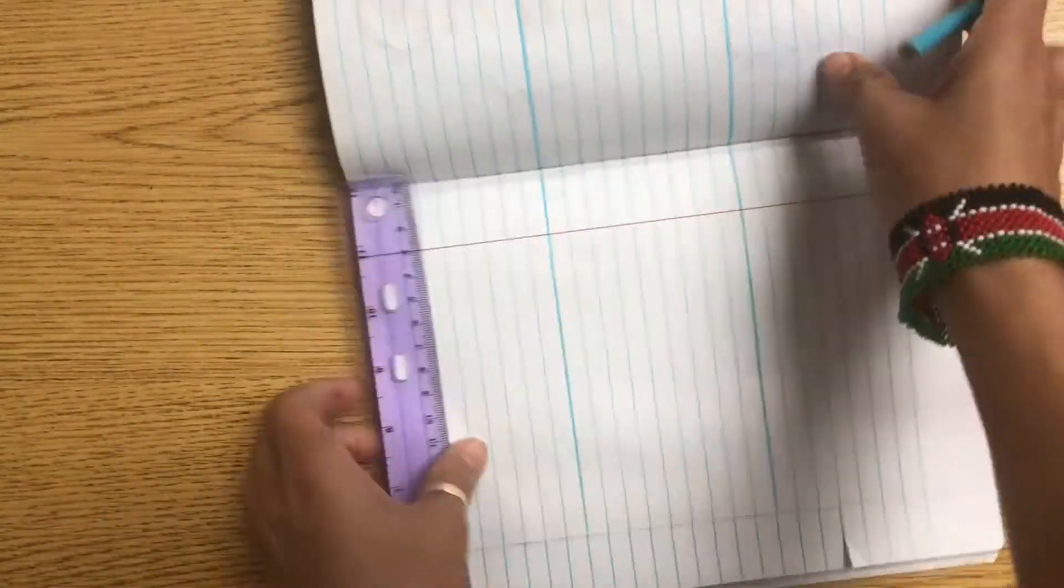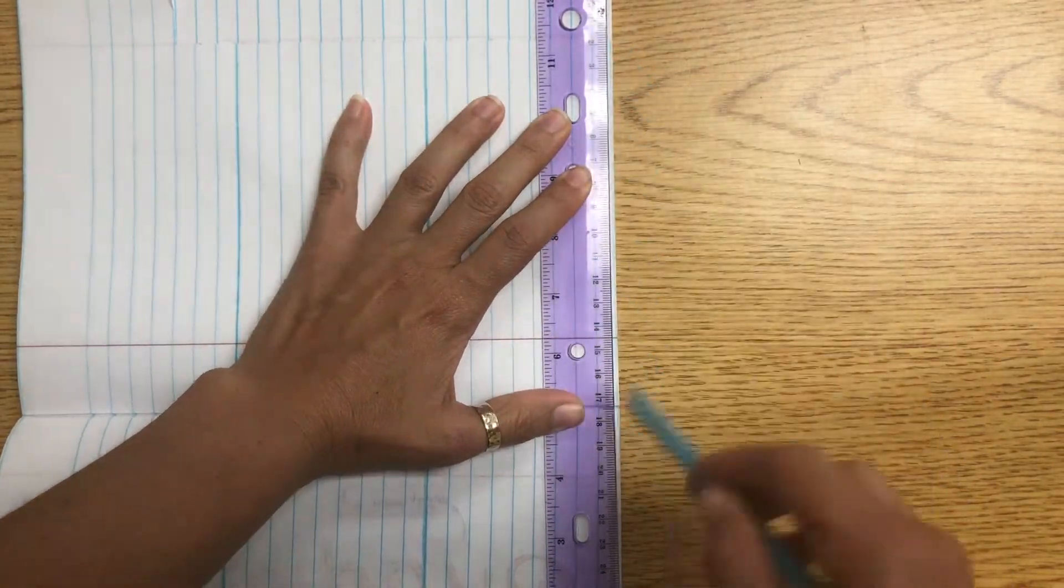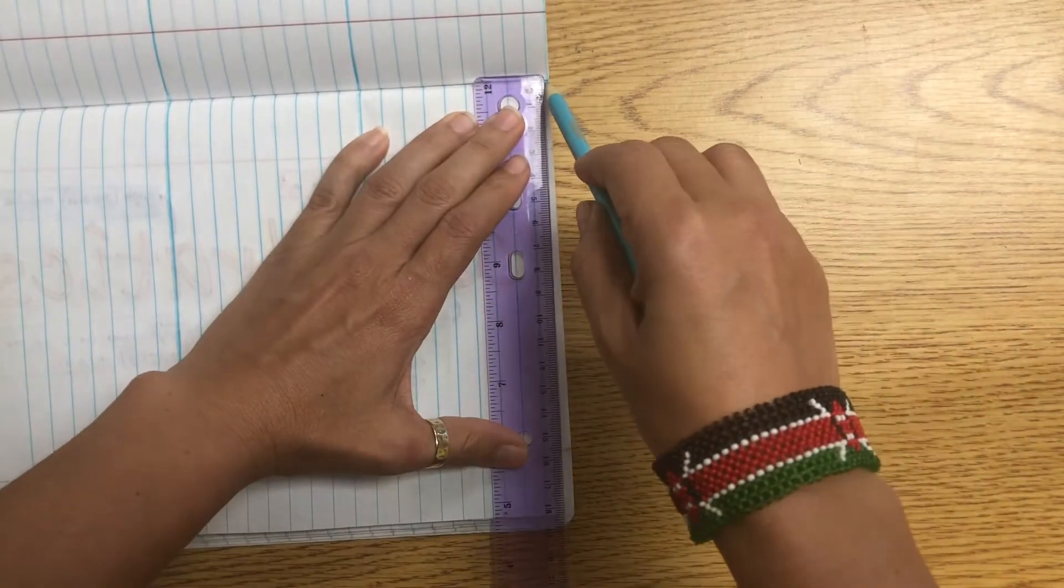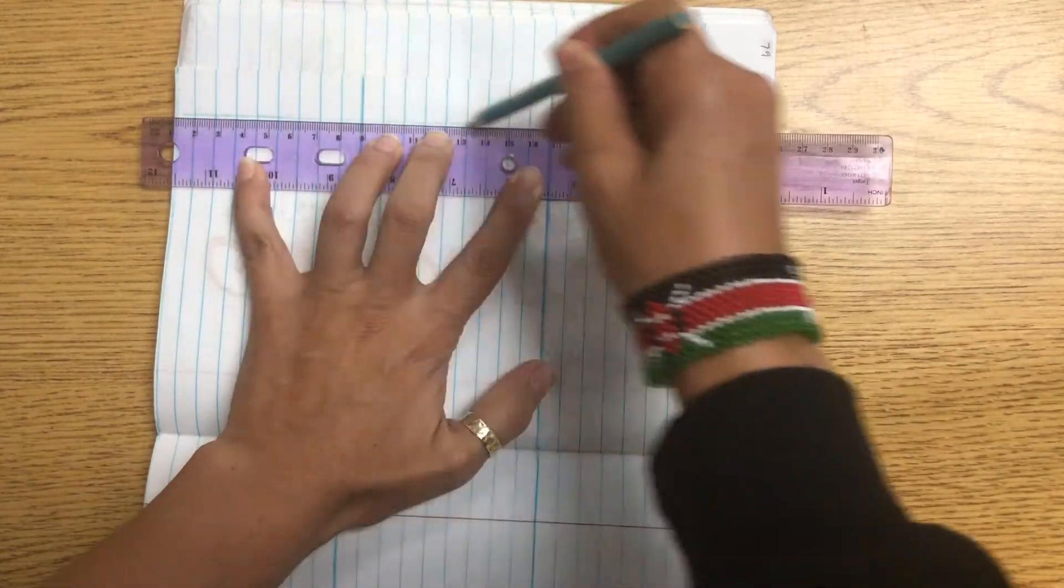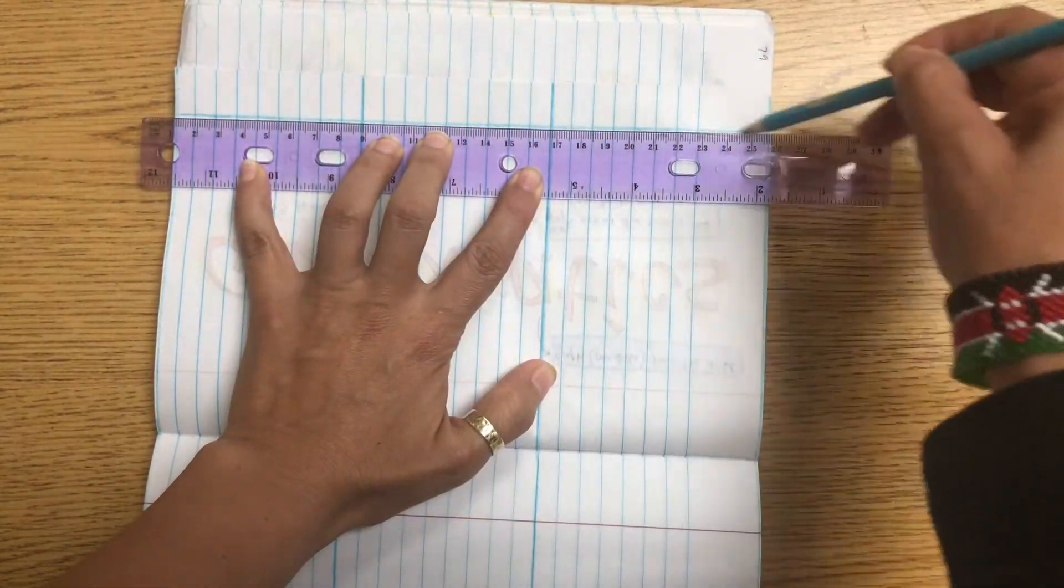I think it works out to be like six or seven lines. Then I'm going to draw a horizontal line at the top where I'm going to write the titles for this page.